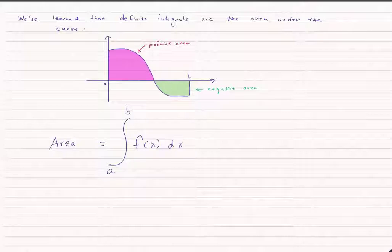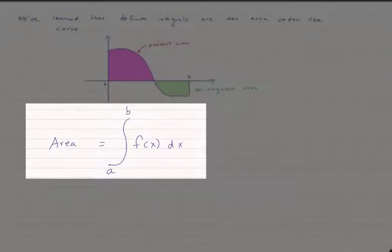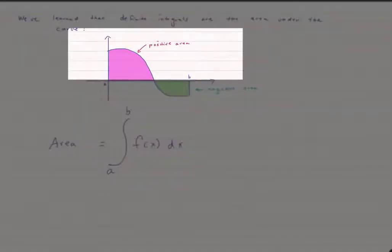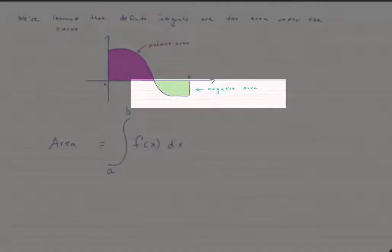It turned into this integral from a to b of f of x dx, and that gave us the area under the curve. Anything above the x-axis was positive, anything below the x-axis was negative.